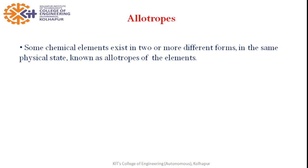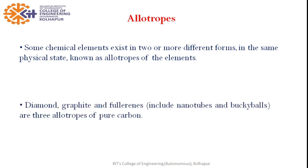A very famous example of an allotrope is carbon. The different allotropes of carbon are diamond, graphite, and fullerene. Diamond and graphite are both basically carbon, but there is a huge difference in their properties due only to different atomic arrangements. Diamond has a crystalline structure — it is very hard and insulating. Graphite on the contrary is conducting and brittle. Diamond and graphite exist in bulk form, but at nanoscale we get new allotropes of carbon: fullerene, which includes nanotubes as well as buckyballs.